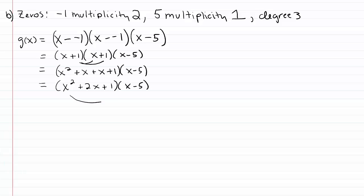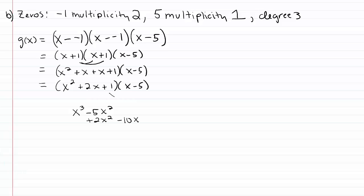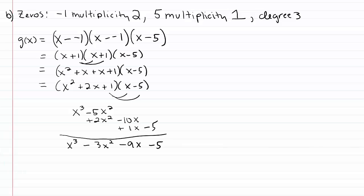That gives us x squared plus two x plus one, to be multiplied by x minus five. So x squared times x gives x cubed, x squared times negative five gives negative five x squared, two x times x gives positive two x squared, two x times negative five gives negative ten x, and one times x minus five gives x minus five. Combining like terms, we end up with x cubed minus three x squared minus nine x minus five. That polynomial function has the desired zeros with the appropriate multiplicities and degree three.